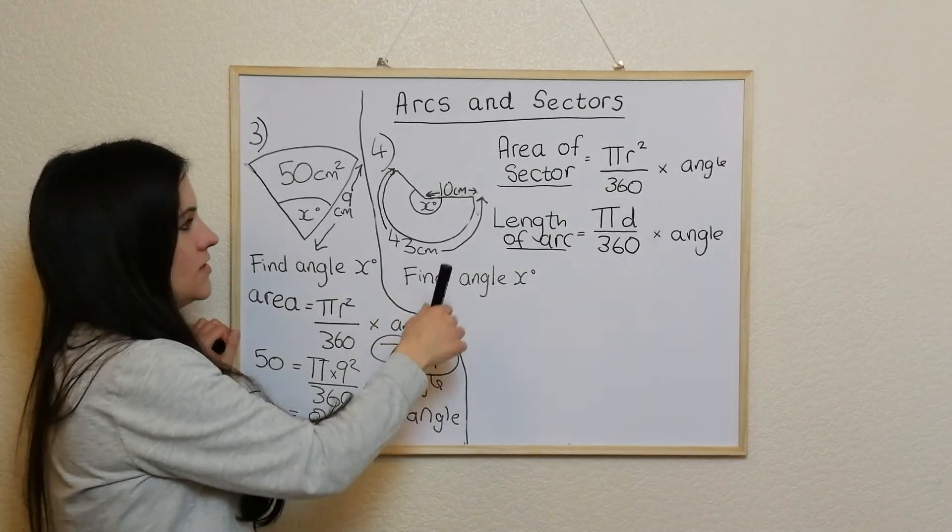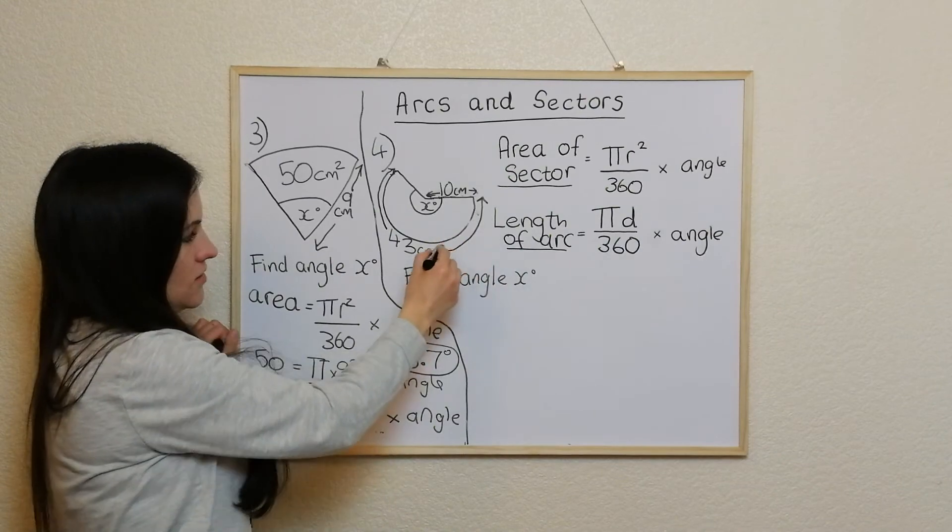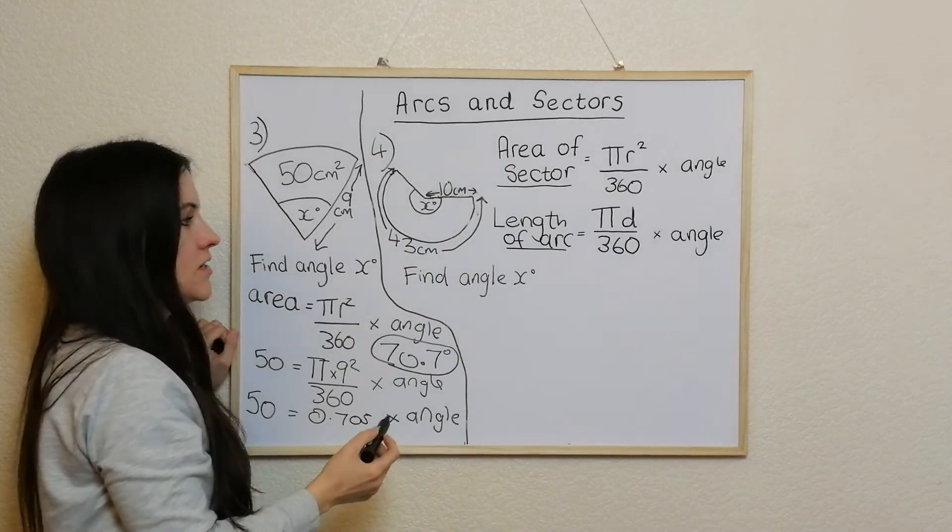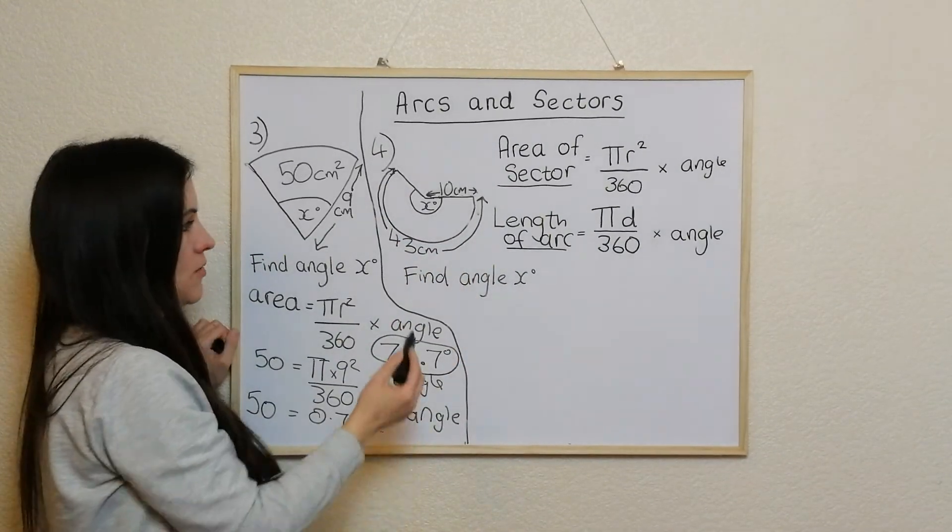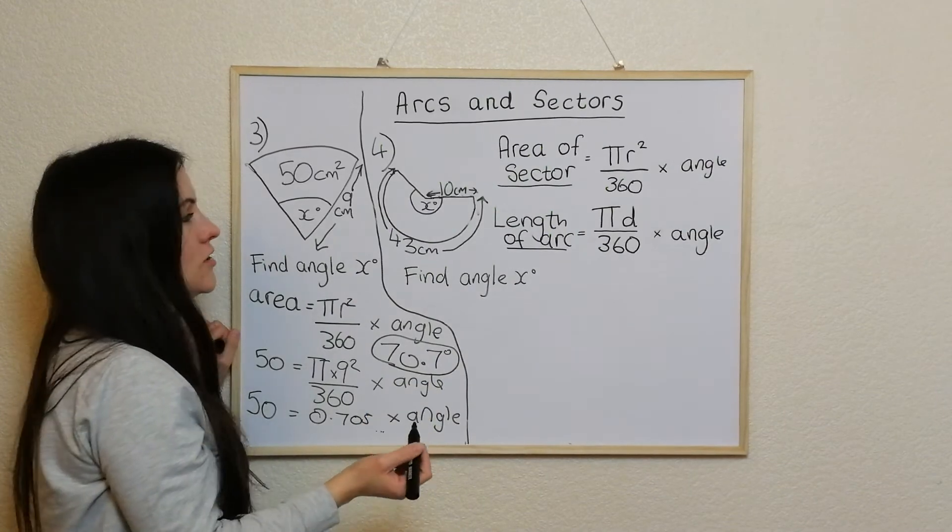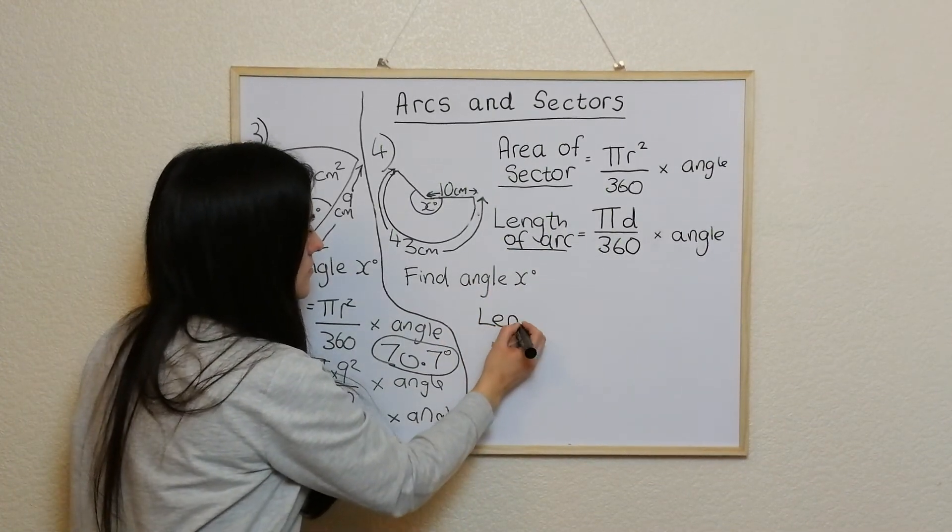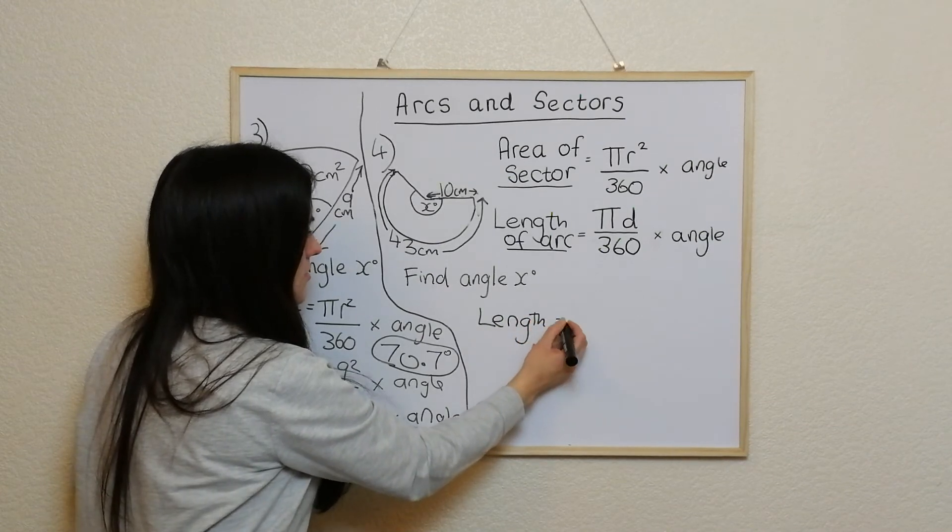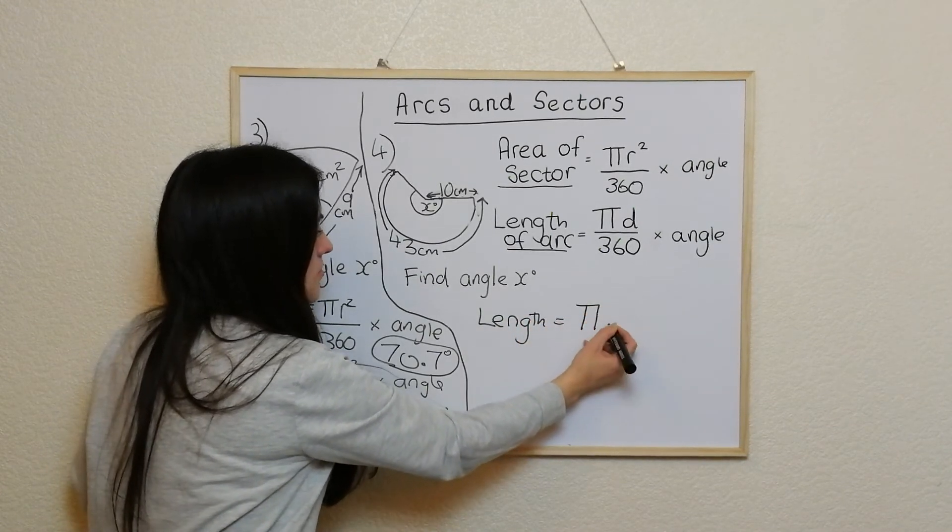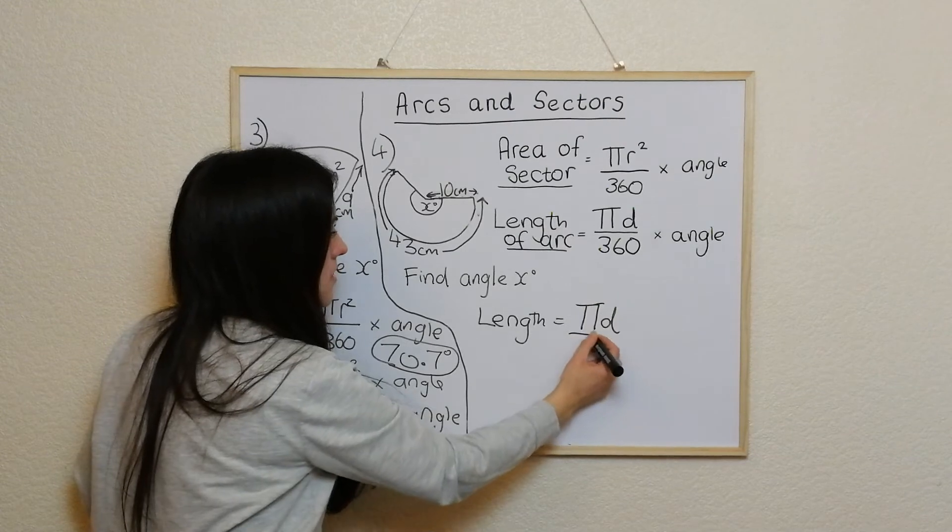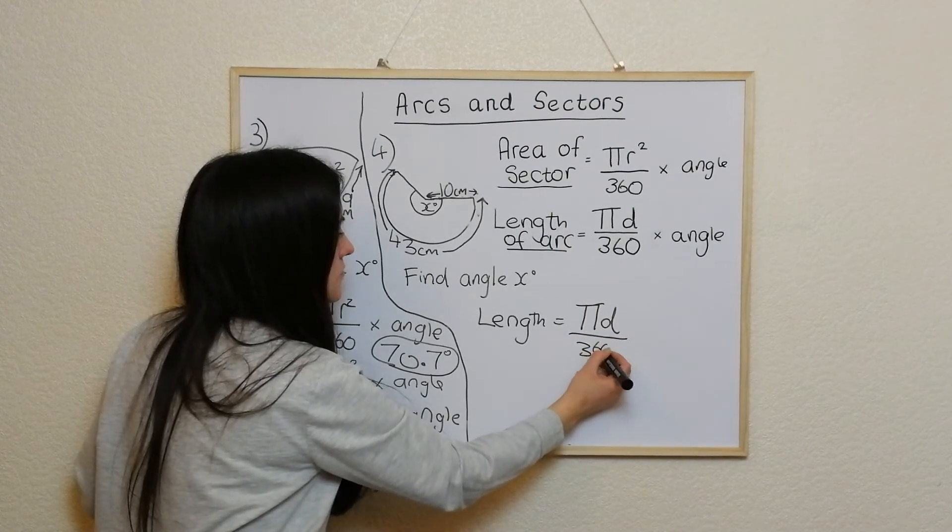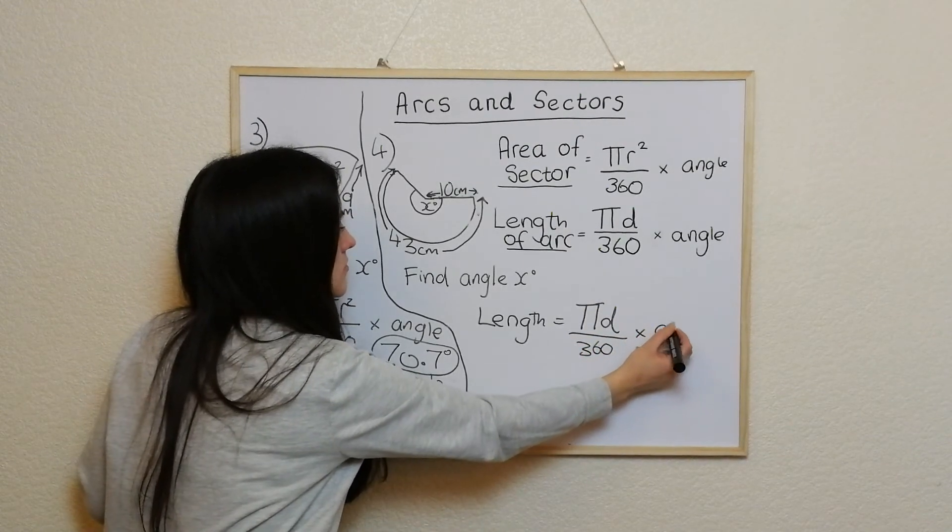This one here is giving us here the length going round the outside. So we've got the length of the arc, but what we're trying to get is the angle. So I'm going to use this formula here. So length equals pi d over 360 times angle.